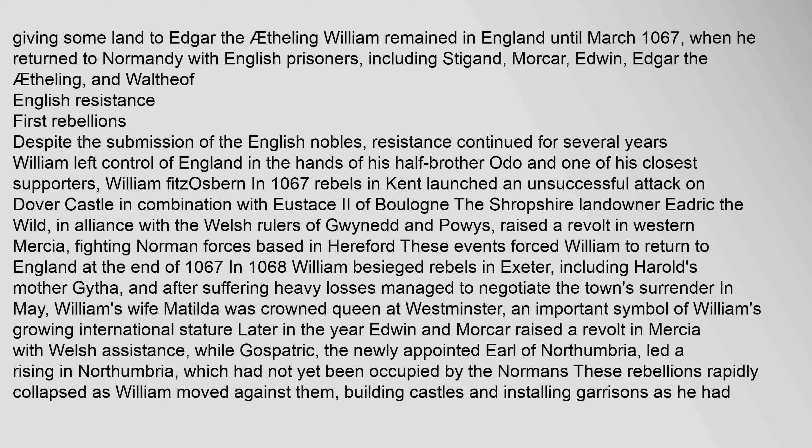Despite the submission of the English nobles, resistance continued for several years. William left control of England in the hands of his half-brother Odo and one of his closest supporters, William Fitzosborne. In 1067, rebels in Kent launched an unsuccessful attack on Dover Castle in combination with Eustace II of Boulogne. The Shropshire landowner Edric the Wild, in alliance with the Welsh rulers of Gwynedd and Powys, raised a revolt in western Mercia, fighting Norman forces based in Hereford. These events forced William to return to England at the end of 1067. In 1068, William besieged rebels in Exeter, including Harold's mother Gytha, and after suffering heavy losses managed to negotiate the town's surrender.